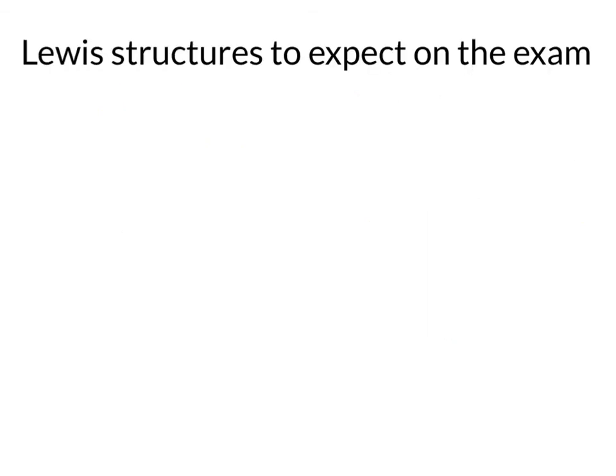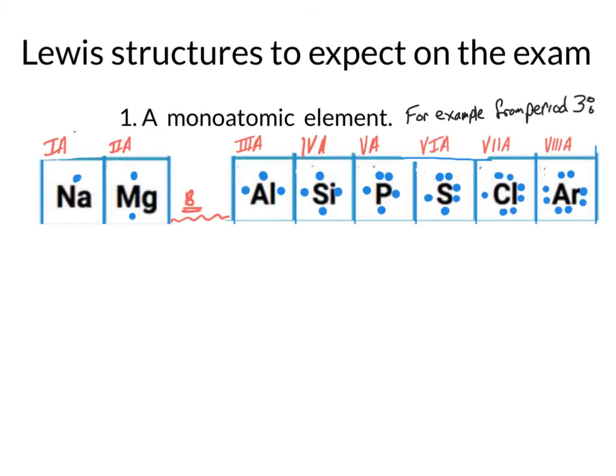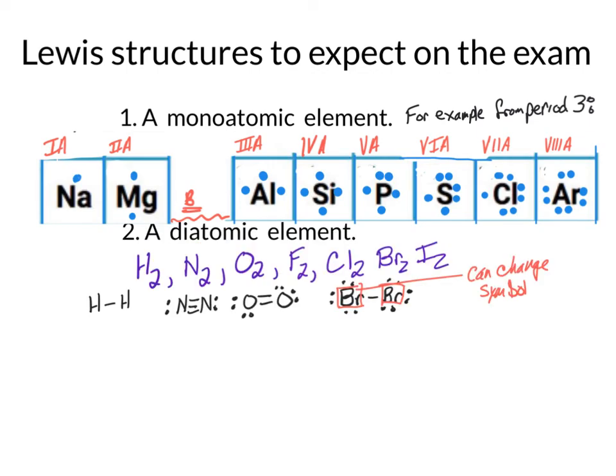For your exam you will be asked to draw the Lewis structure of three different types. Number one, a monoatomic element. Number two, one of the diatomic elements, probably oxygen or nitrogen because I usually like to use the ones with double bonds and triple bonds. And number three,